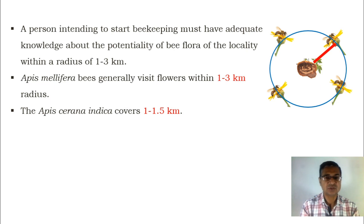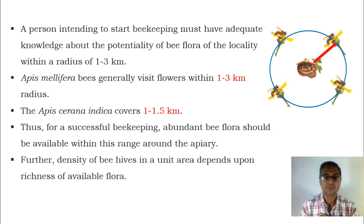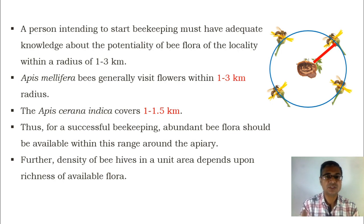Researchers have also observed that Apis mellifera can move more than 20 kilometers in radius to collect pollen grains as well as nectar. However, in the case of Apis cerana indica, whose efficiency is about one to one and a half kilometers from the hive. Thus, for successful beekeeping, abundant bee flora should be available within this range around the apiary. Further, the density of the beehives in a unit area totally depends upon the richness of the available flora. After the beekeeper surveys the area, the number of boxes placed depends on how much flowering is present, and hives can be increased accordingly.